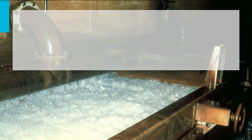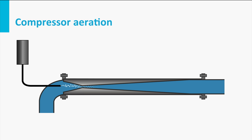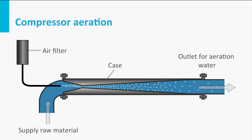The last group of aeration systems are the bubble aerators, consisting of plate, deep well and compressor aerators. Bubble aerators have the advantage that they can be easily incorporated in the treatment scheme — the required energy is not extracted from the water phase but given to the air phase, making gas transfer much more flexible. Compressor or deep well aerators are used when the removal of carbon dioxide is undesirable. In a compressor aerator, air is directly injected into a water pipe through a compressor just before a narrowing in the pipe, causing higher turbulence, leading to small air bubbles and good mixing. Venturi aeration, depicted in the figure, is a variant of compressor aeration that was often applied in the past.